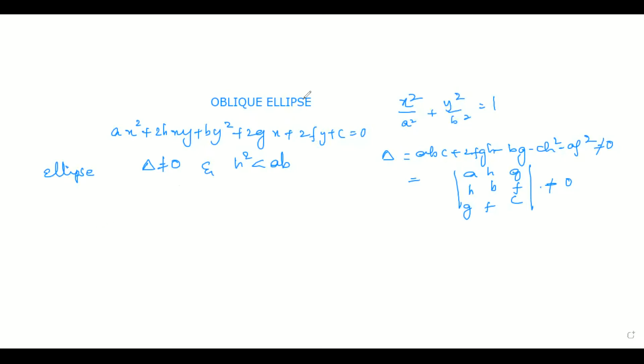So the terms related here, basically what we are going to discuss is what is major axis length for an oblique ellipse. So in order to find out all the terms, not only these two, all the terms of an oblique ellipse, initially we need to find out the center of the ellipse.